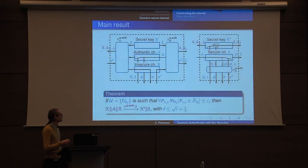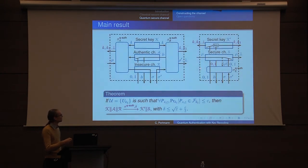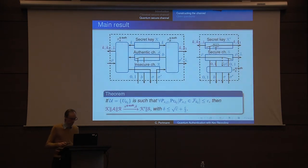The main theorem says the two systems are indistinguishable. The error is: if our codes have the property that we fail to catch Pauli errors with probability at most ε, then the two are indistinguishable with error on the order of √ε plus ε/2.